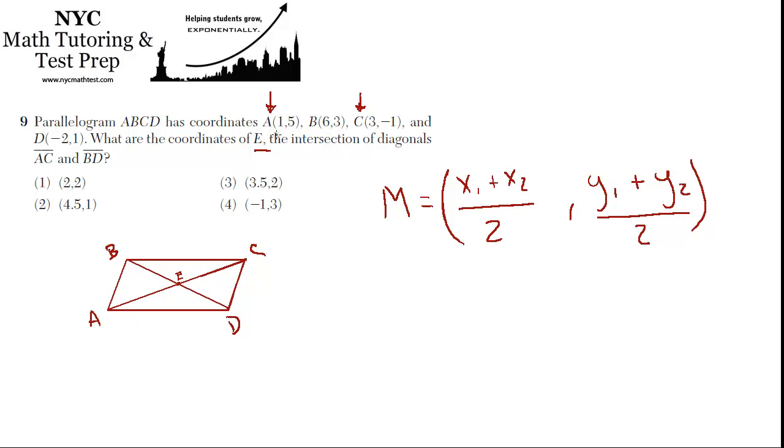So, the midpoint of A and C is going to be 1 plus 3 over 2, comma, 5 plus negative 1 over 2. 1 plus 3 is 4 over 2 is 2. And 5 plus negative 1 is 4 over 2 is 2. So, 2, 2 is the midpoint.